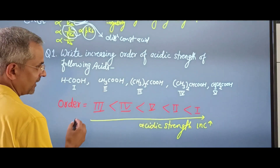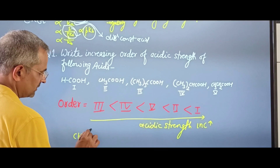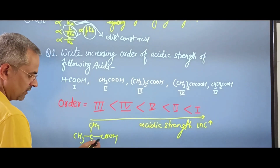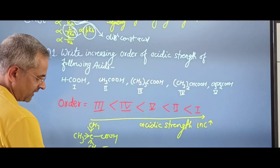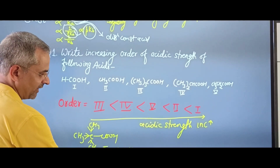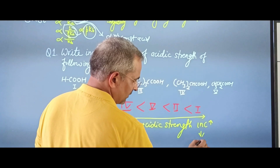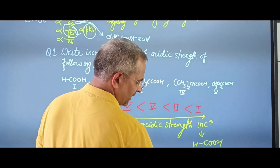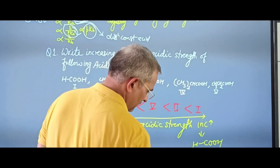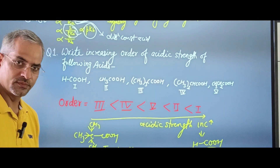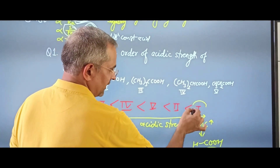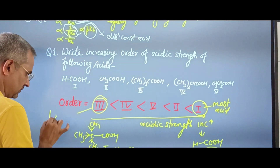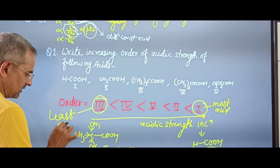Why does acidic strength increase this way? Here, CH₃ groups are present — CH₃COOH has a plus I effect (electron releasing), which is maximum, reducing acidity. Where there is no plus I effect, acidity is highest. So the compound with maximum plus I effect is least acidic, and the one with no plus I effect is most acidic.